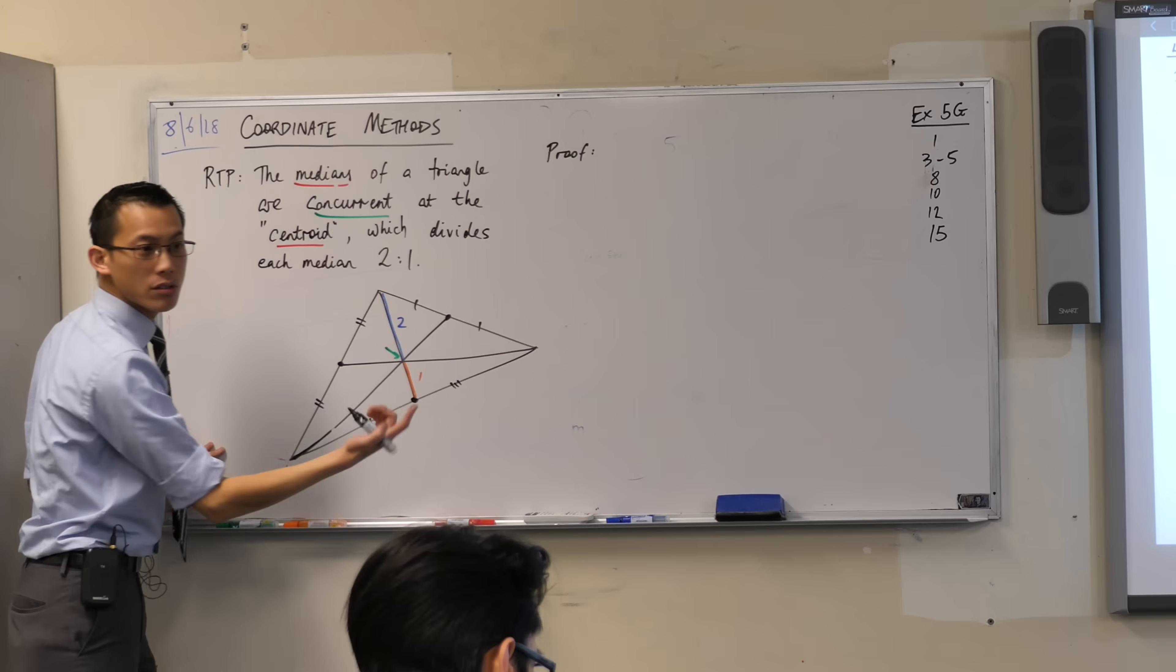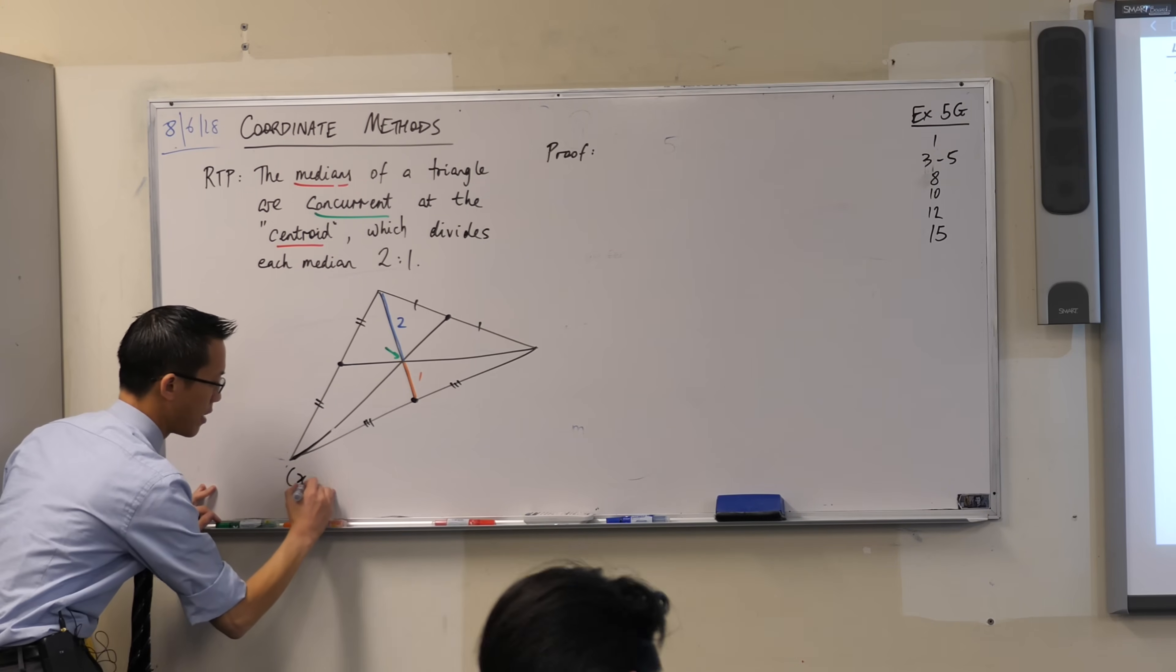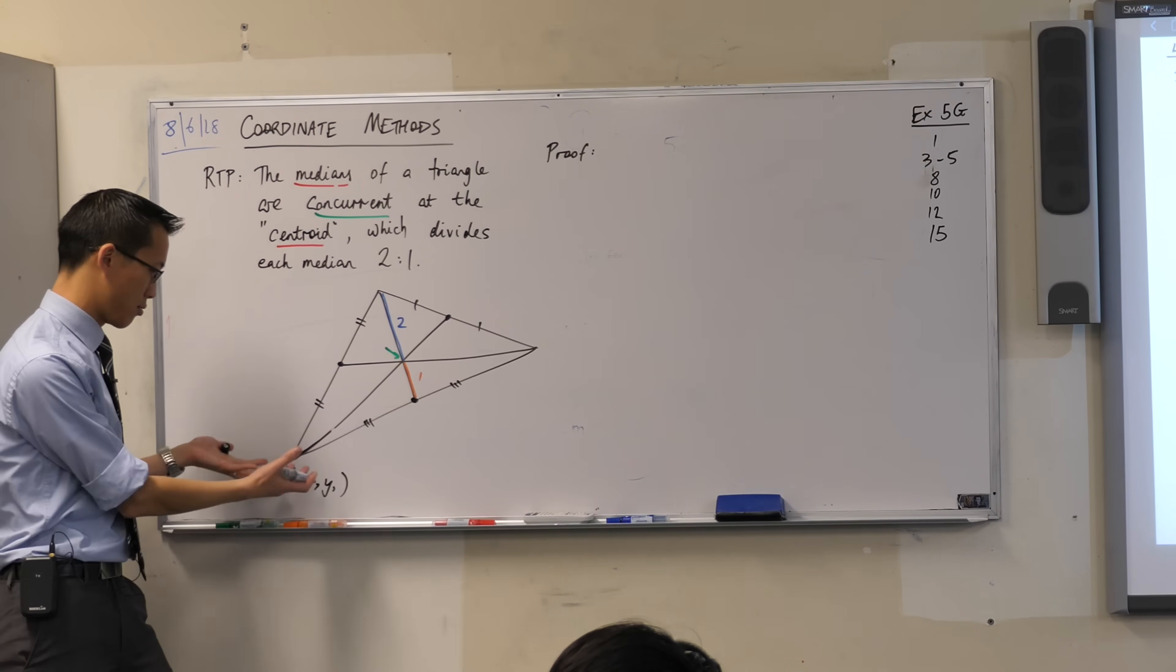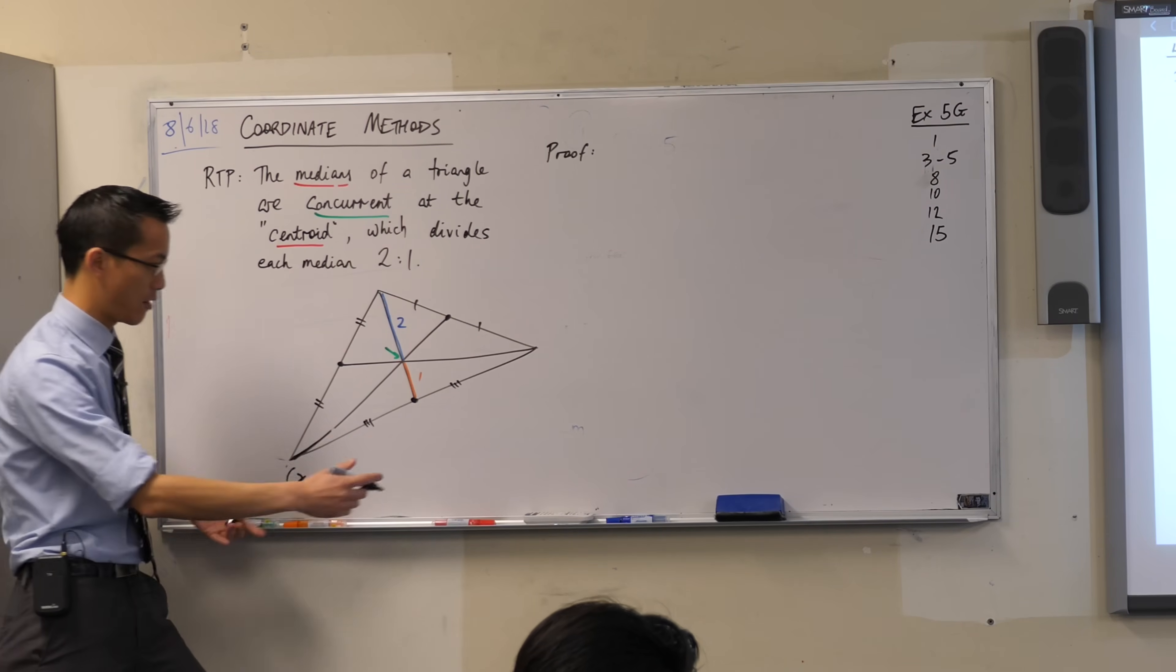So I've got three corners of the triangle, right? So I'm going to call one x1, y1. I can't give it any more specific label than that, because it could be anywhere, right?